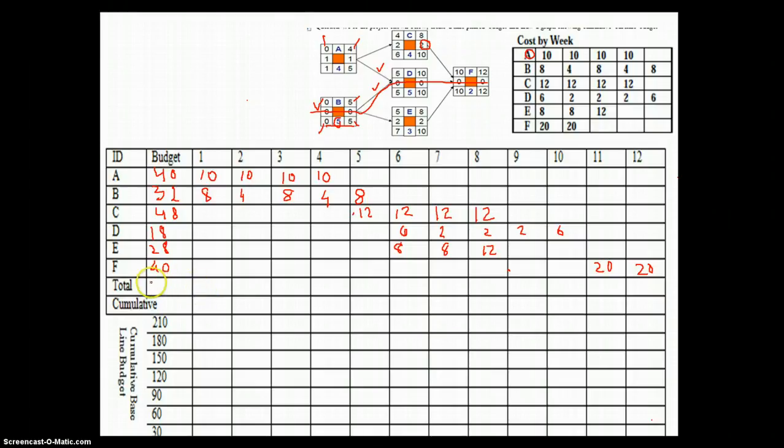And now we would do the total budgetary requirements. So you can see here it is 18 for month 1, 14 for month 2, and then 18, 14, 20, 26, 22, and 26, 2, 6, 20, and 20.